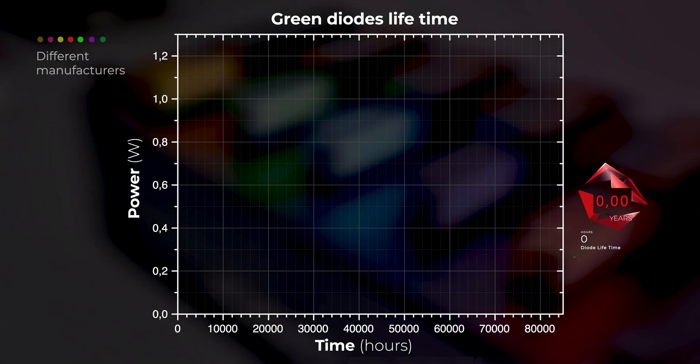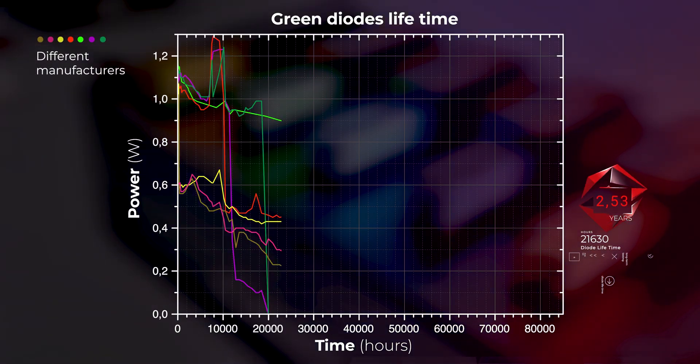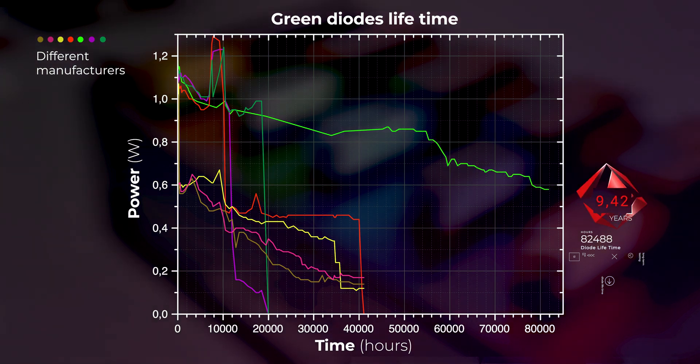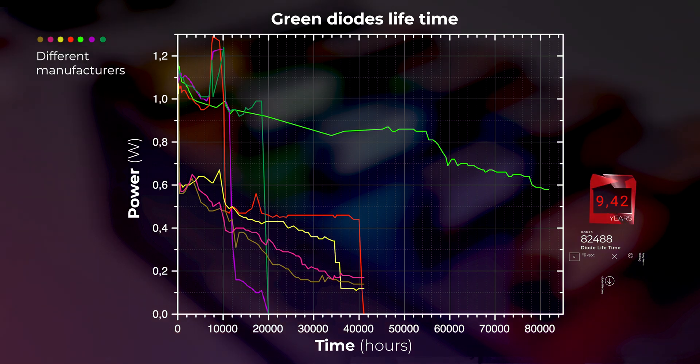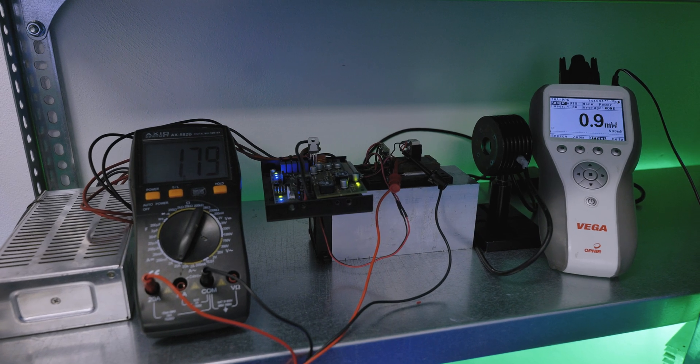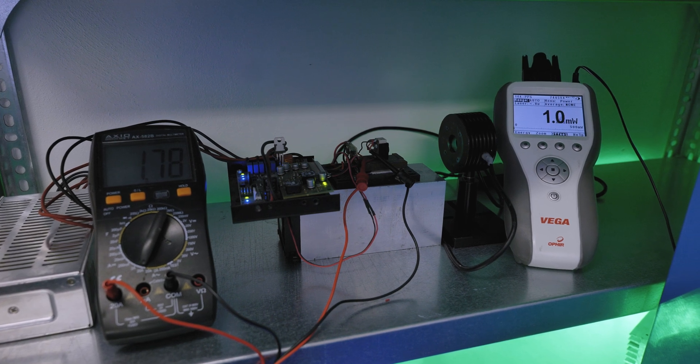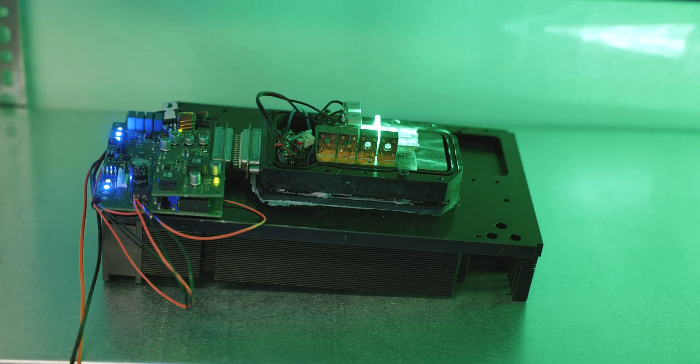The test was finished in April 2024, nearly 10 years after the start. The tested diode's power output dropped significantly between hours 81,768 and 82,488. And right before it stopped working altogether, it was still outputting 0.6 watts.